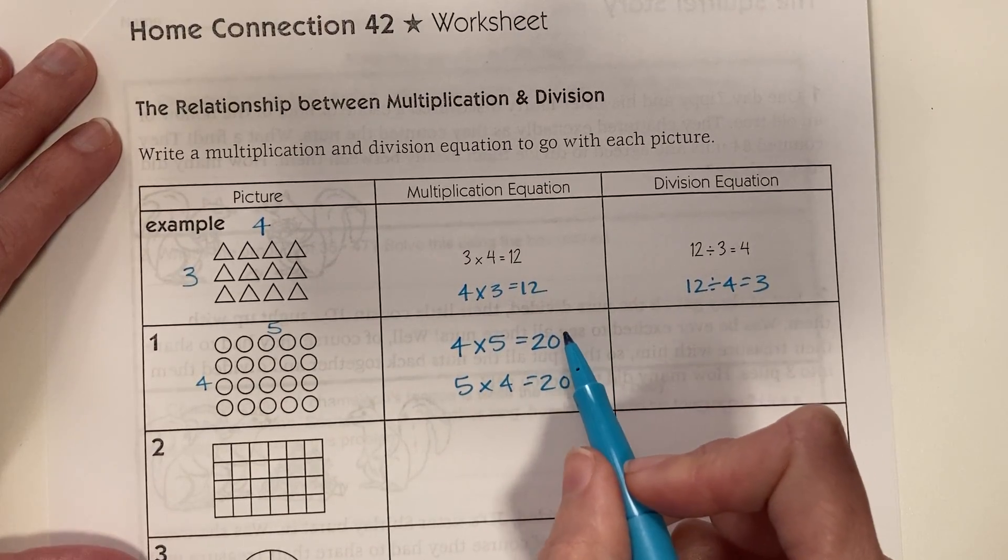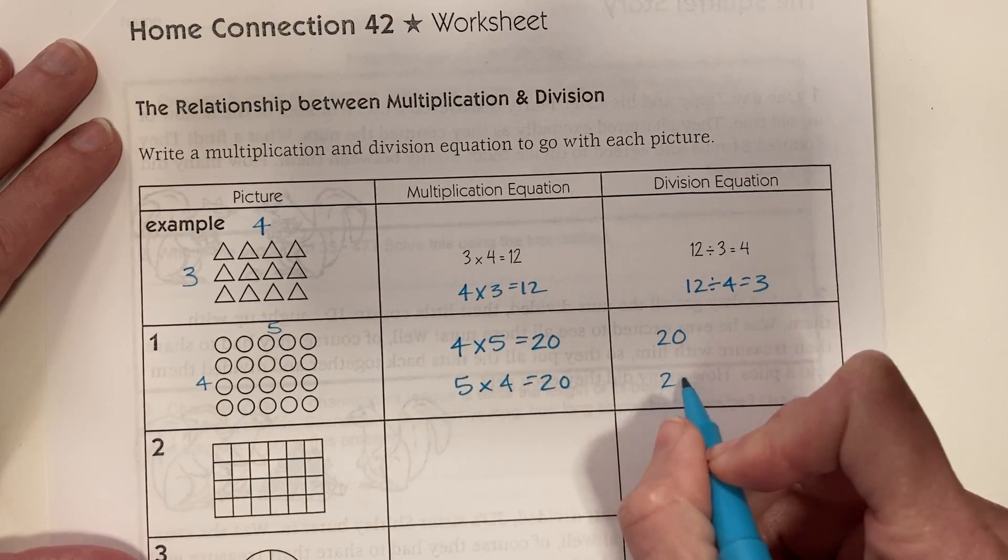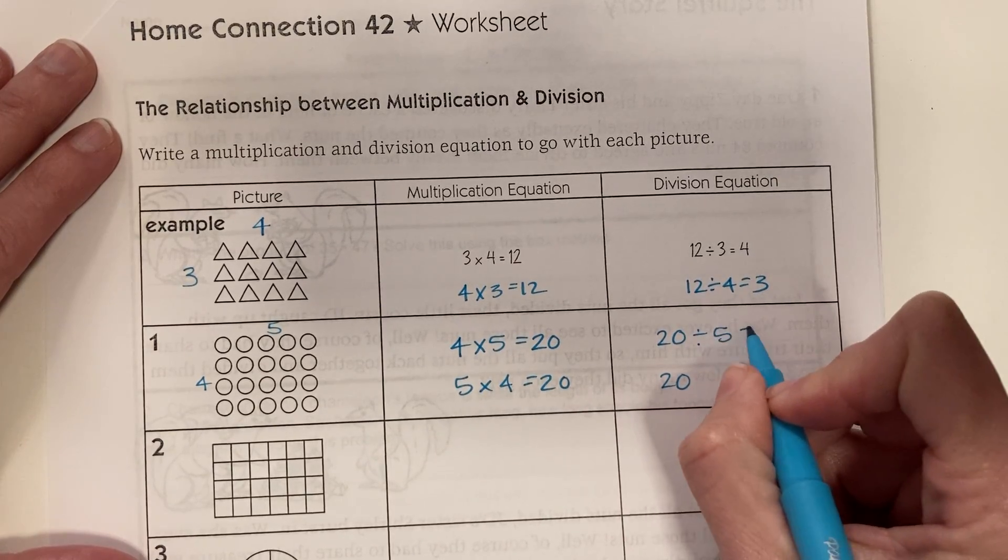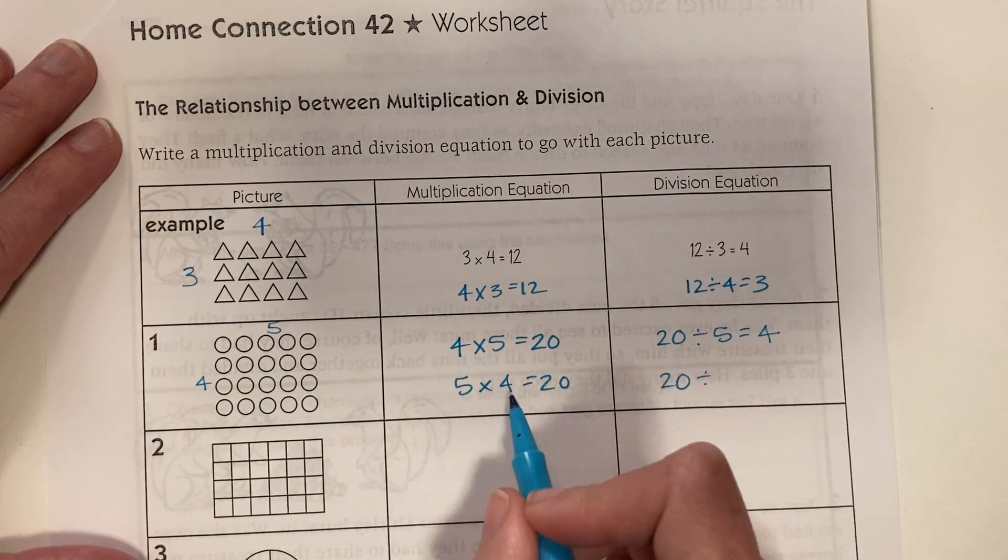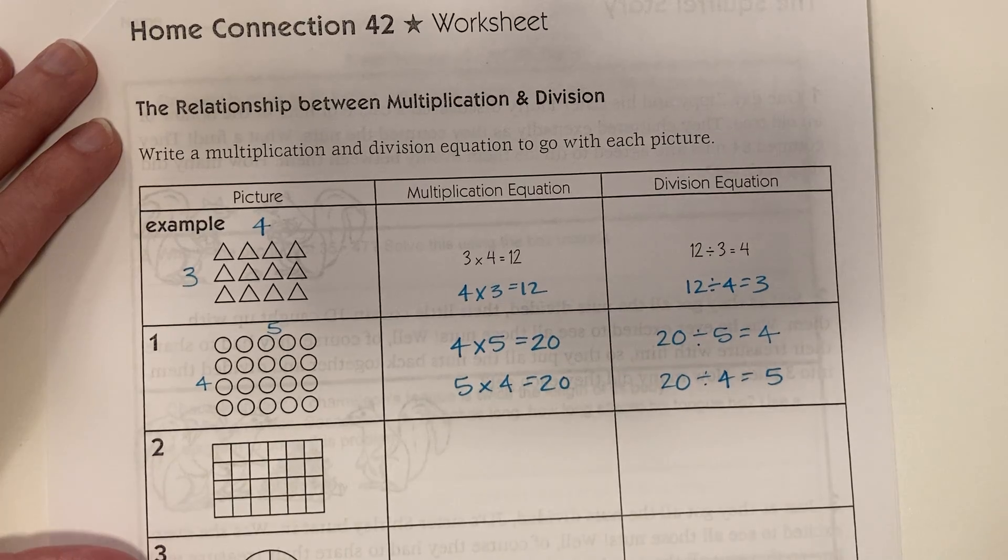And then when you make the division equation you take the product and that becomes your dividend. And then you take one of the factors and that becomes your divisor. And then the other factor is your quotient. Or you can switch it around and make 4 as a factor into a divisor, and then 5 is the quotient.